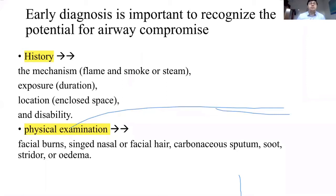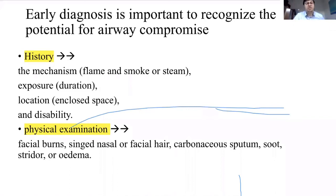You need to know the mechanism of burns — whether it's flame or smoke — whether the patient was in a closed chamber or open air, and whether it's a cold burn with no inhalation injury, or a long exposure duration. Patients who are intoxicated by alcohol or drugs may have been unable to escape. Also consider location — closed space or not — and disability, as disabled patients have less ability to escape from the scene. On physical examination, look for facial burns, signs of nasal and facial hair singeing, carbonaceous sputum, soot, stridor, or edema — all of which alert you to the possibility of inhalation injury.